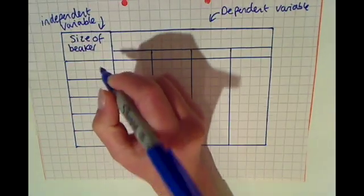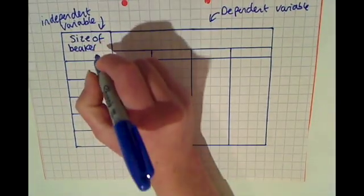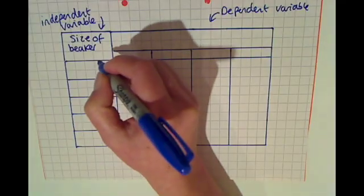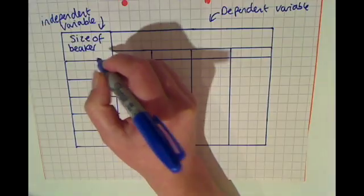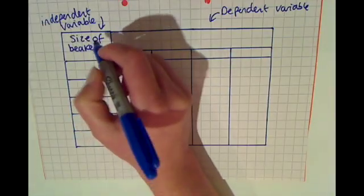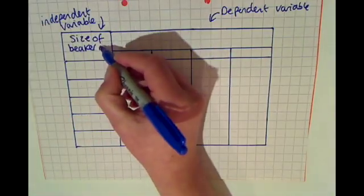And I must put my units of measurement in here. So units of measurement are things like centimeters, kilograms, seconds, etc. For my size of beaker, my units of measurement are milliliters.